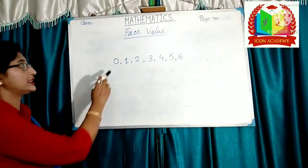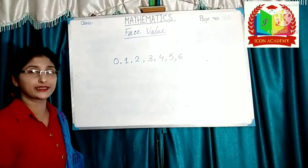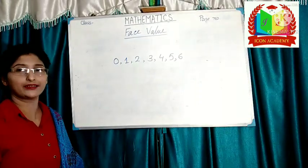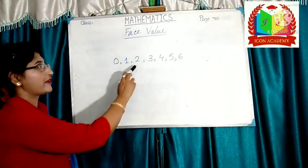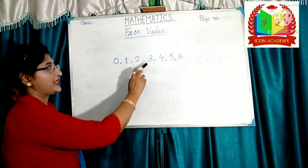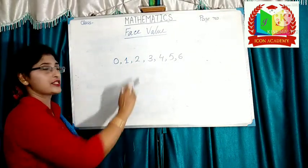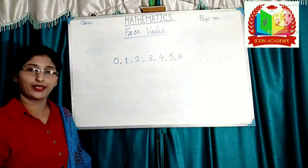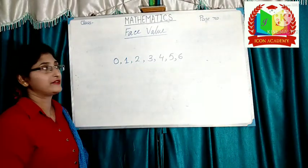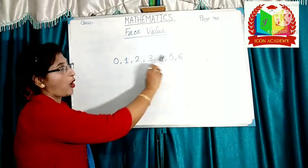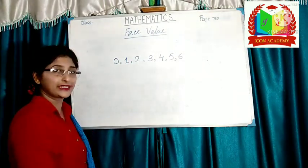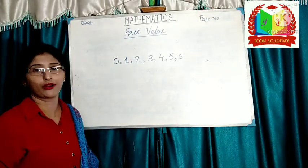Phase value of 0 is always 0. Phase value of 1 is always 1. Phase value of 2 is always 2. Phase value of 3 is always 3. Phase value of 4 is always 4. Phase value of 5 is always 5. Phase value of 6 is always 6, and so on.